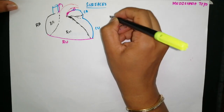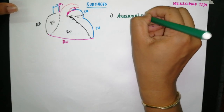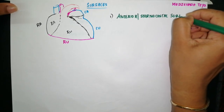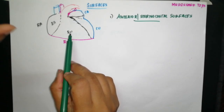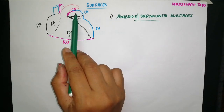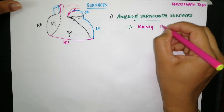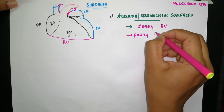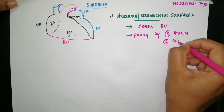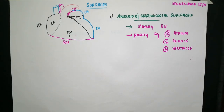The first surface is the anterior surface, also called the sternocostal surface — the surface lying just behind the sternum and the ribs. This surface is formed mainly by the right ventricle, and partly by the right atrium, left auricle, and left ventricle.